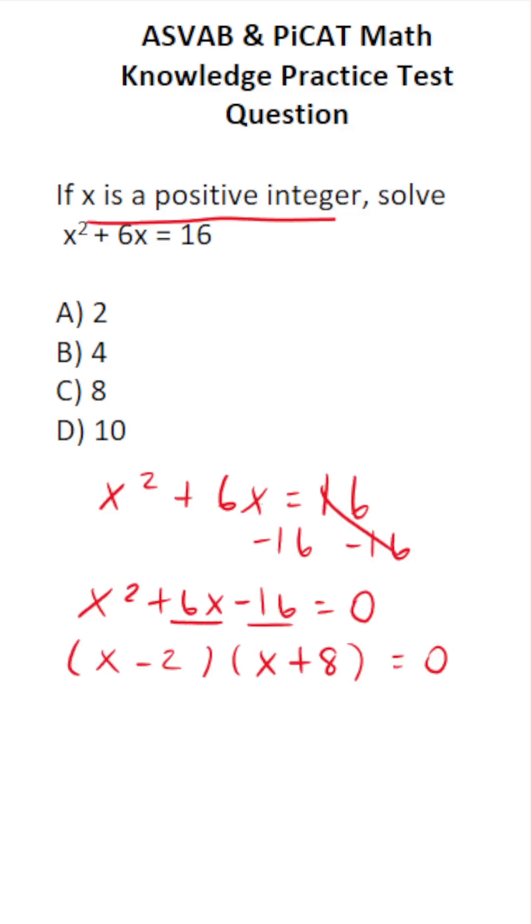All right, so now we're going to set each of these equal to 0 individually. We have x minus 2 equals 0 and x plus 8 equals 0. Add 2 to both sides to solve for x here. This crosses out. This says x equals 2. Subtract 8 from both sides here. This says x equals negative 8.